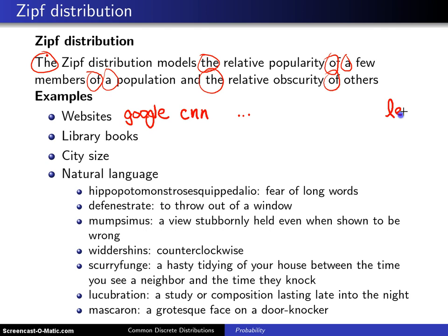Not many people visit that, but there are a whole bunch of obscure sites and not many popular ones. Similarly with library books: if you go to a library, there will be the current bestsellers — not many of them, but they exist — followed by the classics like War and Peace and A Tale of Two Cities.